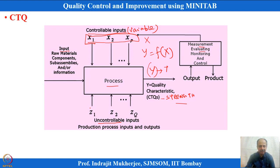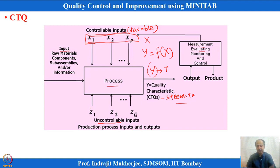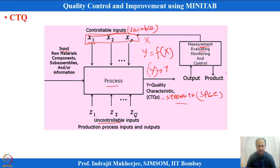This is the CTQ process diagram. This is a manufacturing process, but it can also represent a service process. There are control variables, uncontrollable or noise variables, certain inputs, and CTQs required by the customer. Whenever I have a CTQ, I have a dimension to measure, a specification given for it. I measure it, check whether it is within specification, and accordingly change variable settings to get the best output.